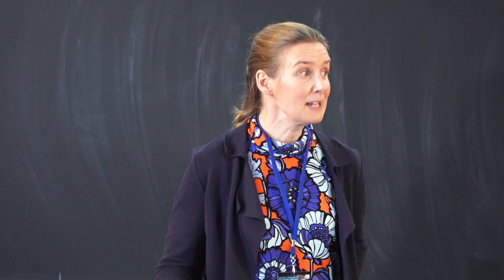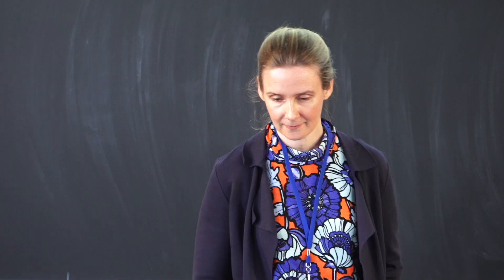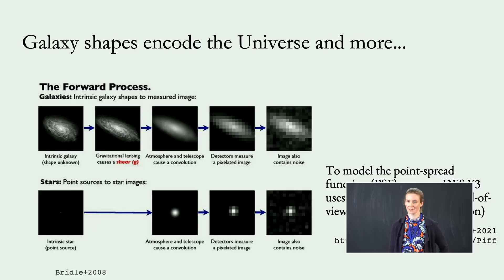Summarizing the current impact of photometric redshift modeling on cosmology — both from DES Year 3 on the left for cosmic shear alone, and from KiDS-VIKING in the paper by Angus Wright — the different contours show slight variations of the photometric redshift method. The important point right now is that we don't need to argue about 0.3-sigma shifts, so this looks pretty good. However, it will become much more challenging going forward.